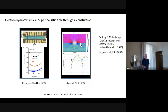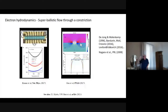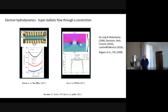Following the Levitov-Falkovich observation, several experiments tried to look at electron-electron scattering effects in very clean graphene. On the left you can see that as you raise the temperature — increasing the electron-electron scattering rate — the resistance actually goes down by about 10 percent. As you raise the temperature further, electron-phonon scattering comes in and the resistance goes up again. This gain is limited to about 10 percent. We will see that we can get much higher than that.